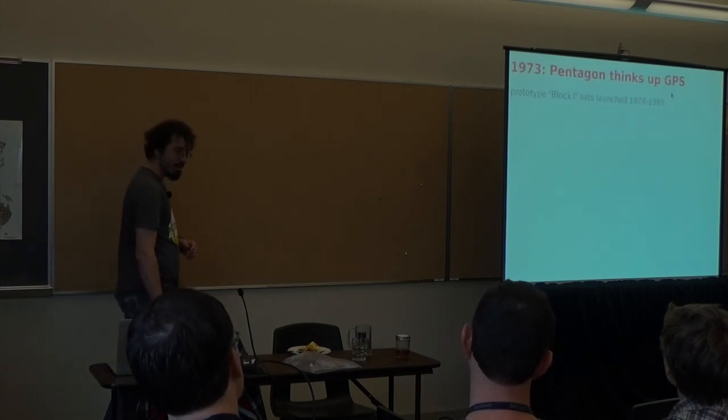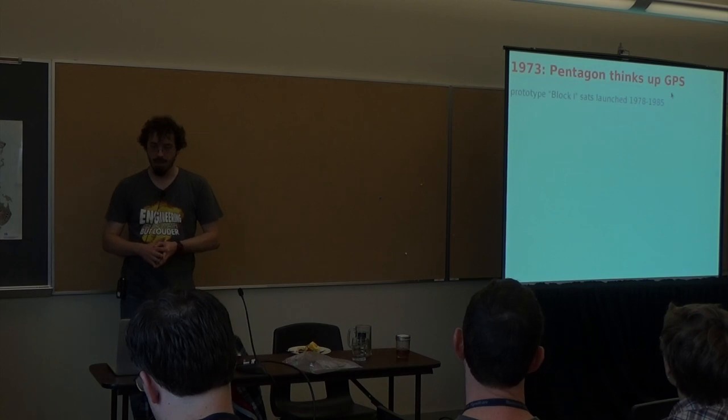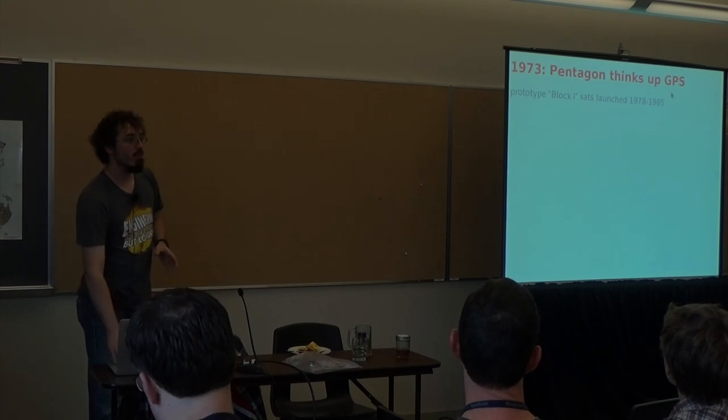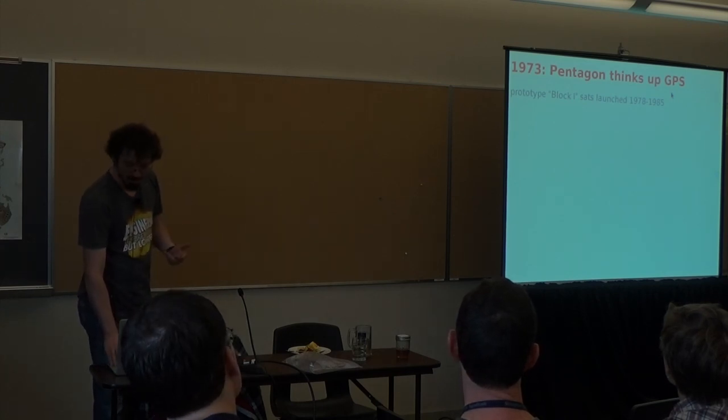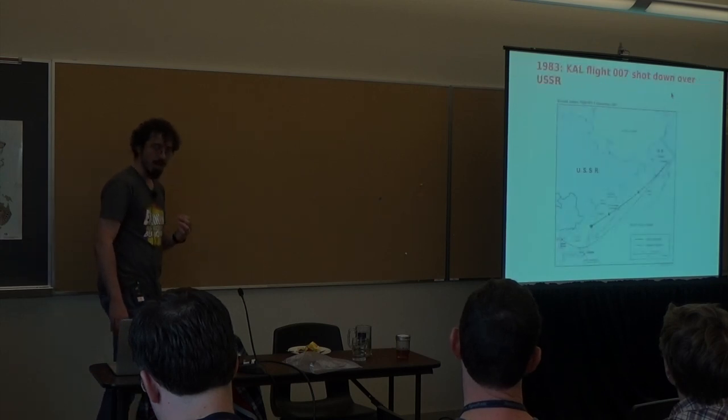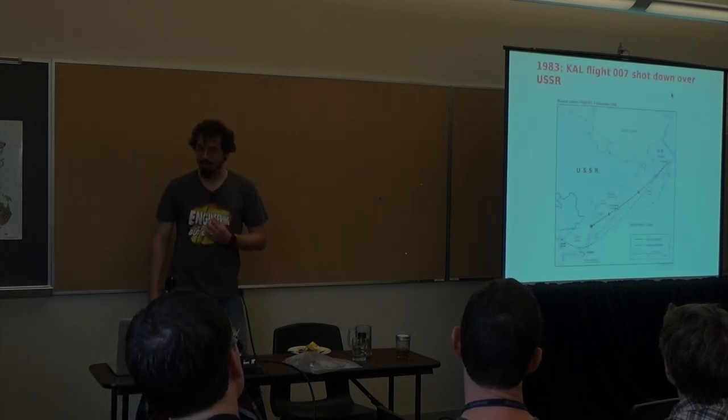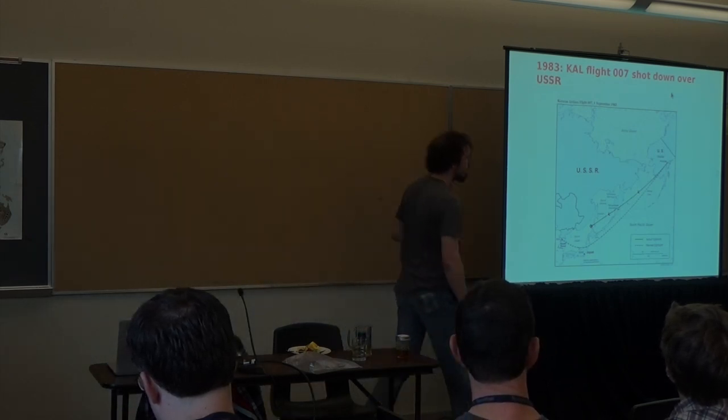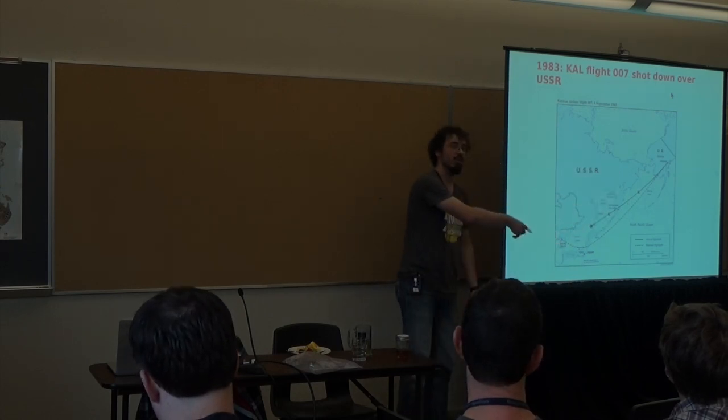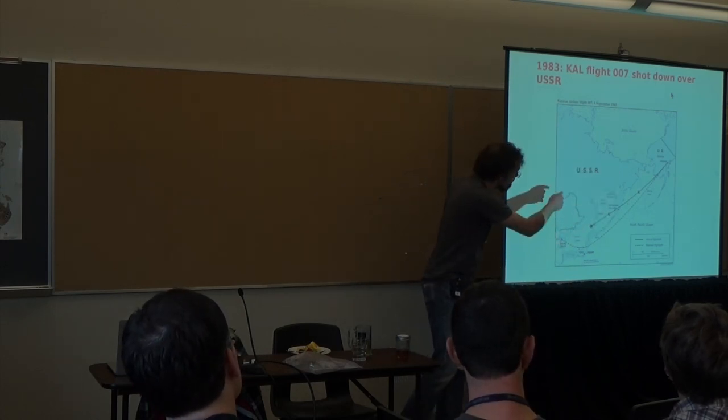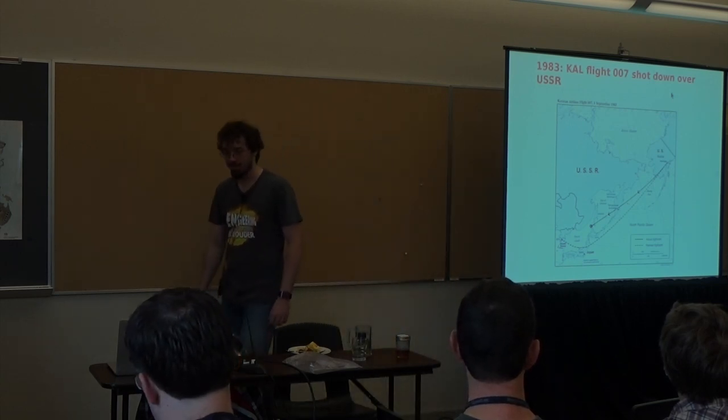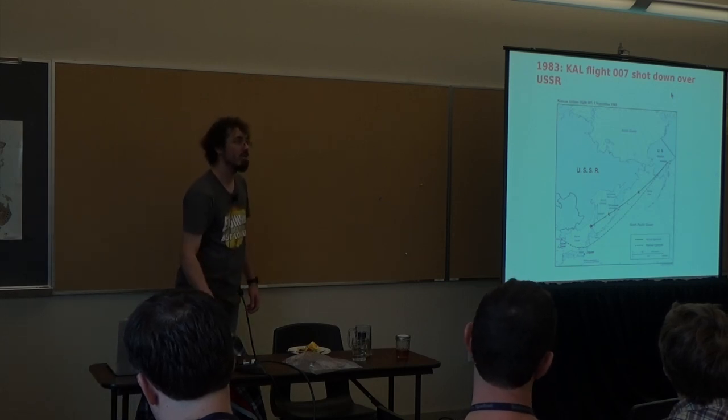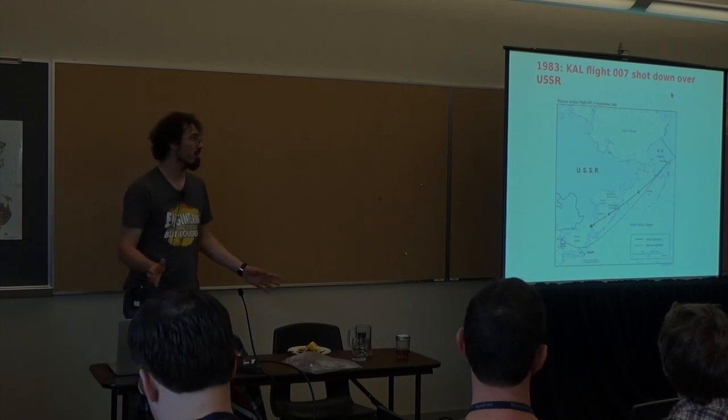So, in 1973, the Pentagon has this GPS idea, and they've got the prototype block one satellites launching from 1978 to 1985. That wasn't really a usable system yet, it was proof of concept. And in 1983, some of you may know about this, Korean Airlines Flight 7 was shot down over the USSR because they thought that they were following the correct route. They were, in fact, off course and passed into USSR airspace. In response, President Reagan announced that GPS was going to be made publicly available to civilians once it was ready.